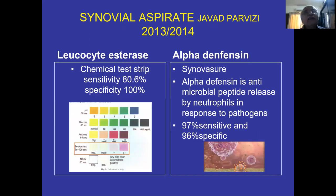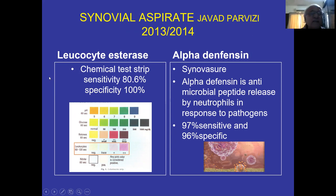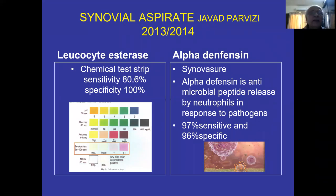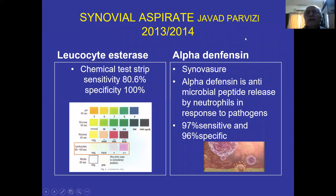The next newer test is known as the leukocyte esterase test — almost like a diabetic test. It can be done in just five minutes. You aspirate, take one drop, and put it on the diabetic strip. Once it shows red, it gives the idea — it is a chemical strip, sensitive and specific at 100%. A slight modification has taken that trait to alpha-defensin.